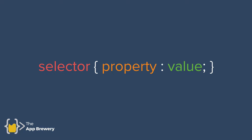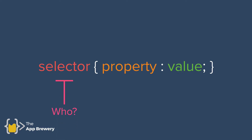The first thing you'll see in a CSS rule is the selector, which comes at the beginning. Then comes a pair of curly braces, inside which your CSS rules reside. Each rule changes the appearance of some property and gives it a new value, and each rule must end with a semicolon — equivalent to a full stop in an English sentence. The selector is basically the 'who': who do you want to modify? Is it the H1, paragraph tags, or image tags?